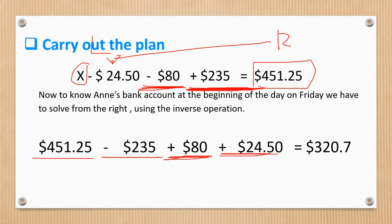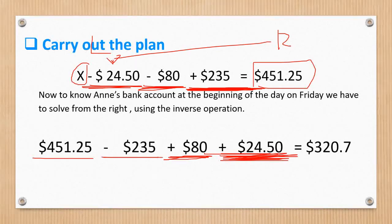And then, in here, it's minus $24.50. So, the reverse of that is plus $24.50. Okay, so again, the reverse of the addition is subtraction. The reverse of multiplication is division.